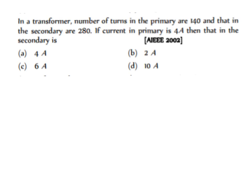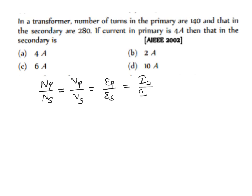Please remember this formula: the number of turns in the primary to the number of turns in the secondary must be equal to the EMF across the primary to the EMF across the secondary. Also, this ratio is inversely proportional to the current — so NP/NS = IS/IP.